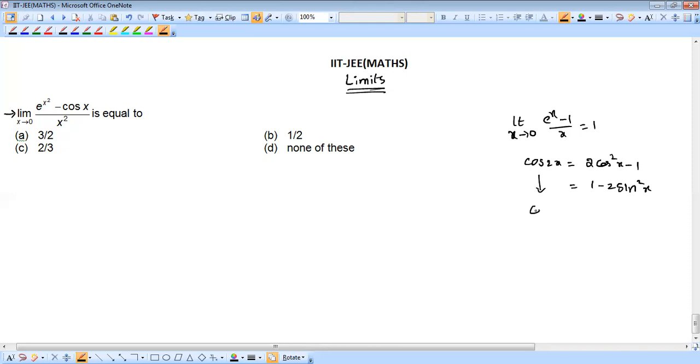Similarly, sub-multiple angles cos x, that is 2 cos square x by 2 minus 1, or 1 minus 2 sine square x by 2. And another thing: limit x tends to 0, sine x by x, which is equal to 1.